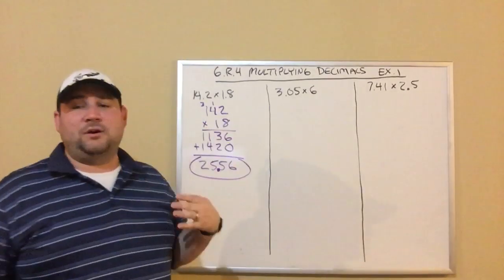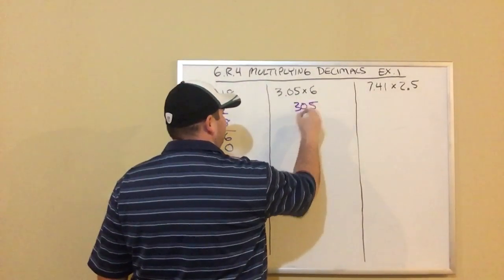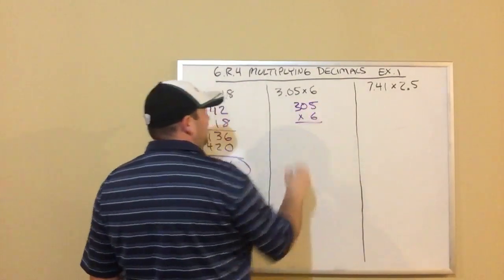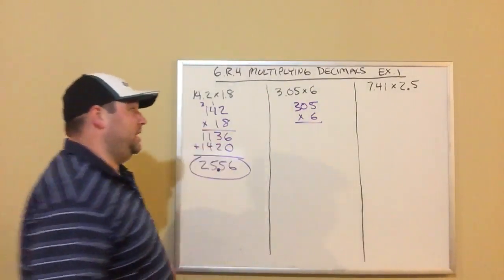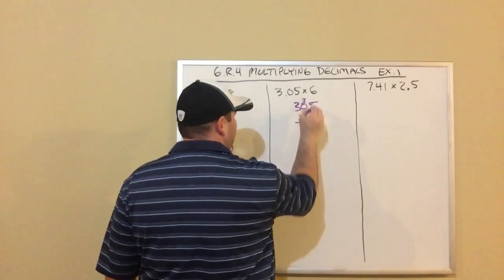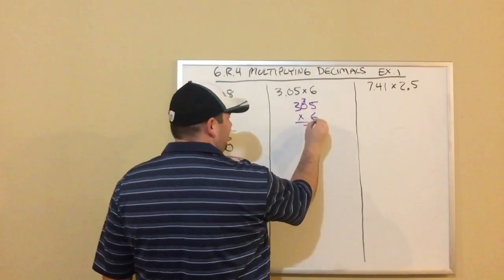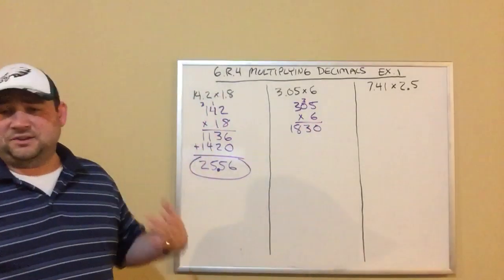Let's look at our next one. We got 3.05 times 6. So I'm just going to write this as if it's 305 times 6. I am not worrying at all about the decimal points. Just going to multiply. 6 times 5 is 30, carrying my 3. 6 times 0 is 0, plus 3 is 3. 6 times 3 is 18. So I got 1830 there.